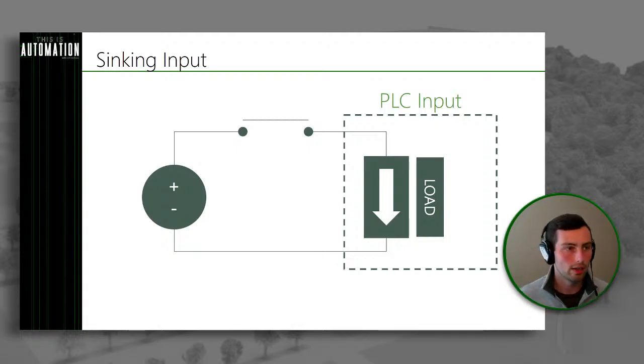An important note: when we talk about sinking and sourcing, inputs and outputs can be either sinking or sourcing. So there are really four possible combinations: a sinking input, a sourcing input, a sinking output, and a sourcing output. The more common ones are the sinking input paired with a sourcing output — typically our outputs are going to be sourcing or providing a voltage source, and our inputs are going to be sinking or providing a path to ground. There are some parts of the world that more commonly use sourcing inputs and sinking outputs, but typically in North America we see it the other way around.